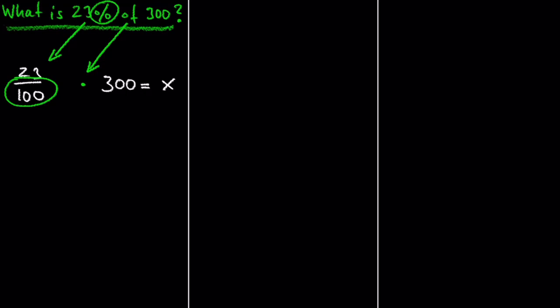And after cancelling out the two zeros and multiplying 23 by 3, we get x equals 69.